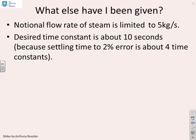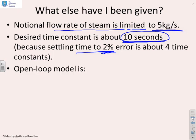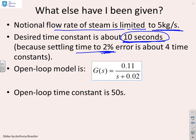What else have I been given? We've been told that the notional flow rate of steam is limited to five kilograms per second. The time constant we would like for this process is 10 seconds - we were told 40 seconds is how long you're allowed to get to within two percent, that means four time constants, therefore the actual time constant you want is about 10 seconds. We've derived the open loop model: 0.11/(s+0.02) between steam flow and temperature change. From this we can see the open loop time constant is 50 seconds, because 50 is the inverse of 0.02.